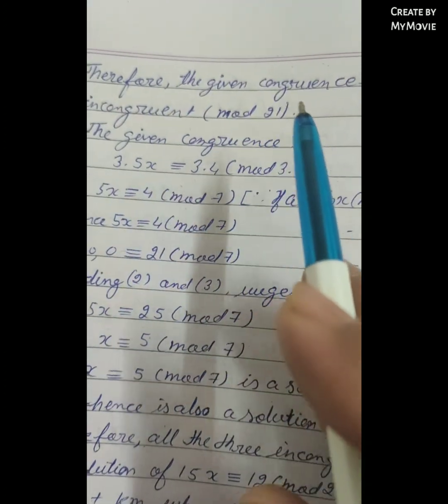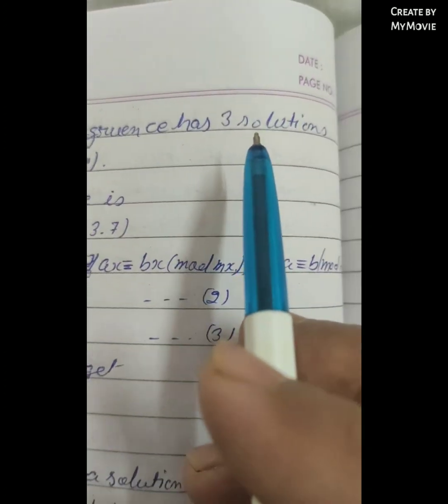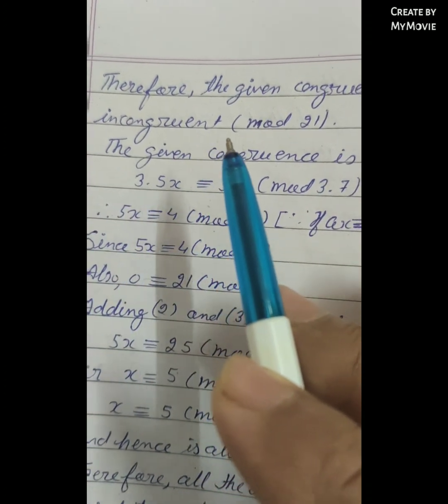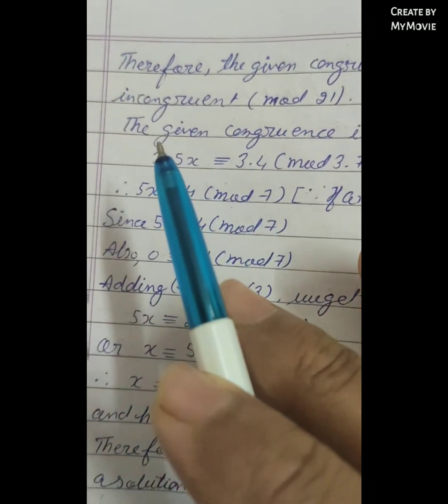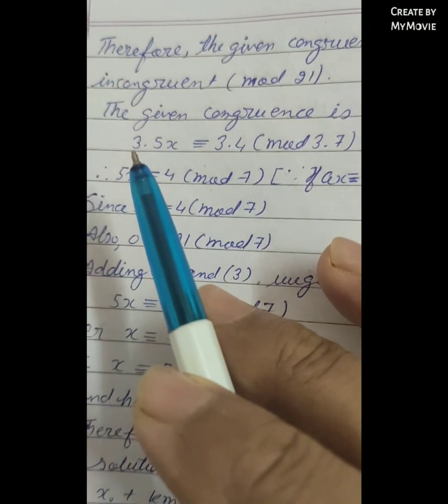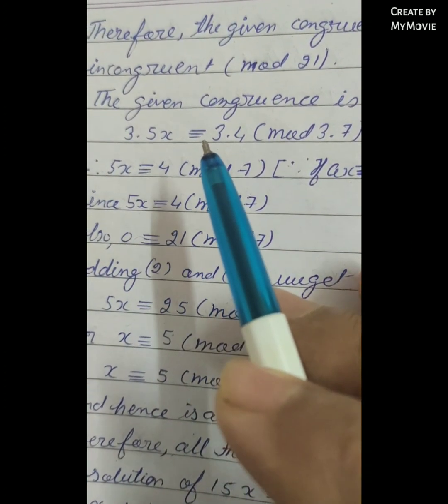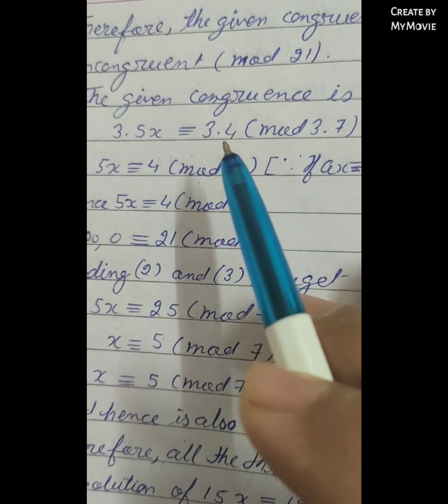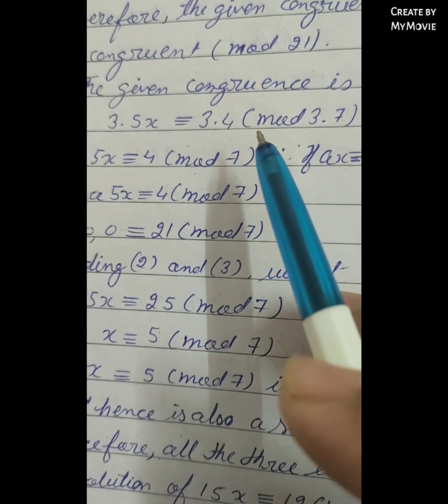Therefore, the given congruence has 3 solutions incongruent modulo 21. The given congruence is 3·5x ≡ 3·4